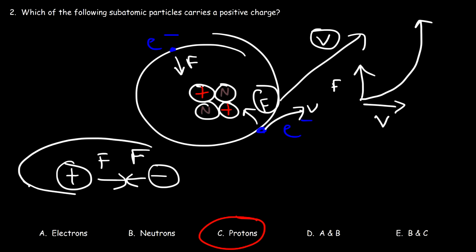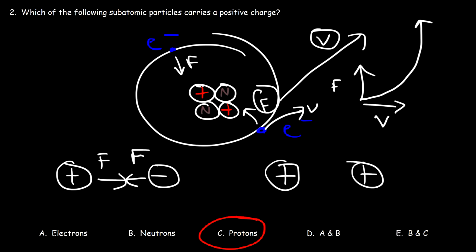If opposite charges attract, then like charges must repel each other. Inside a nucleus you have two protons very close to each other, so the electrostatic force tends to pull them apart. What keeps the nucleus together? It turns out there's another type of force within the nucleus called the strong nuclear force. It's very powerful — much stronger than electrostatic force — and it keeps the nucleus together, preventing the protons from flying apart. Nuclear reactions are far more powerful than chemical reactions because of this.